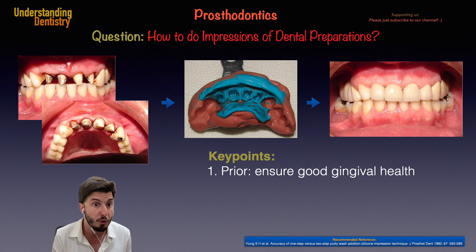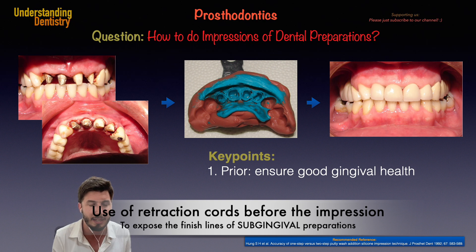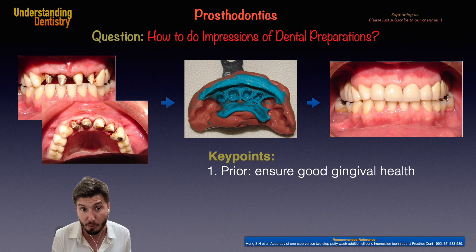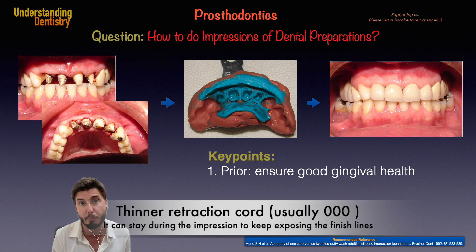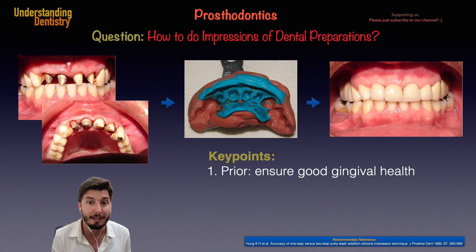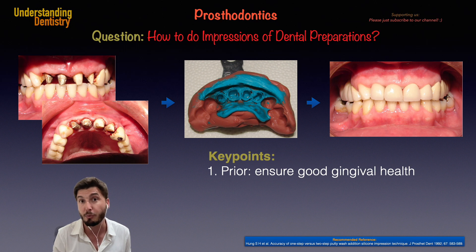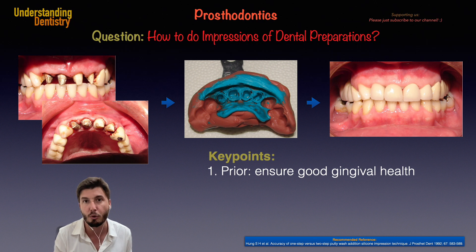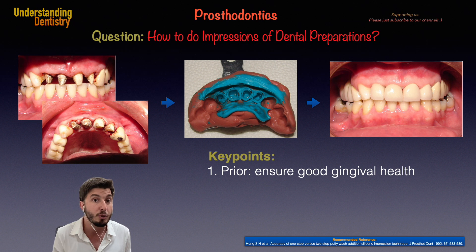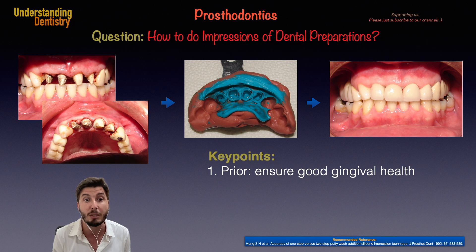We can also use other options to expose the border of the preparation. In this case, we use the two-cord technique. One cord stays exposing the border — the finish line of the preparation — and the other one, which is thicker, we remove before the impression. So the most superficial cord is removed, and only the deeper, thinner retraction cord stays during the impression. Sometimes it comes out with the impression, as you can see, and that's actually normal, because the preparation borders are still visible. The advantage of this one-stage method is that it saves time.